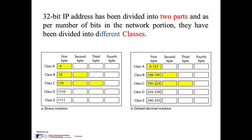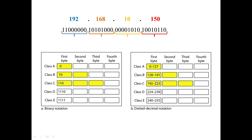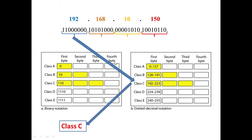For example, if you have been given an IP address such as 192.168.1.150 and you are asked to find which class it belongs to, we just need to focus on the first byte, which is 192. Since 192 lies in the range from 192 to 223, we can say this IP address is a Class C IP address.